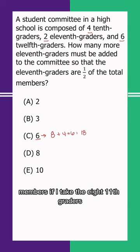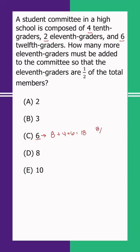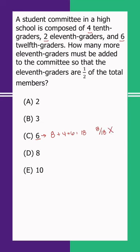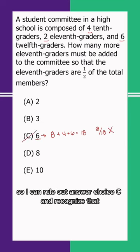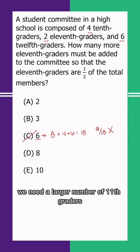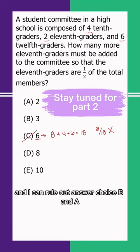If I take the eight 11th graders and divide it by the 18 total, I do not get half. So I can rule out answer choice C and recognize that because my fraction here is too small, we need a larger number of 11th graders. And I can rule out answer choice B and A.